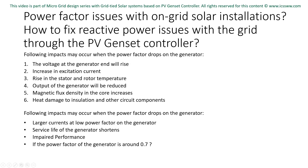The following impacts may occur when the power factor drops on the generator: the voltage at the generator end will rise, increase in excitation current, rise in stator and rotor temperature, output of the generator will be reduced, magnetic flux density in the core increases, and heat damage to insulation and other circuit components. Larger currents at low power factor mean the generator will have to work harder to produce less power. Due to these negative impacts, the service life of the generator shortens and performance is impaired.